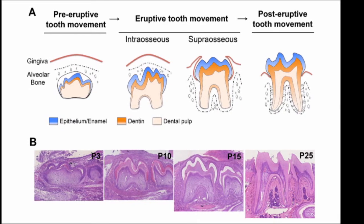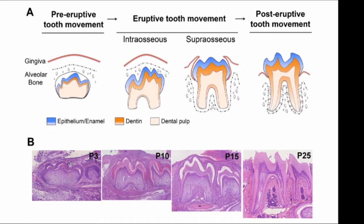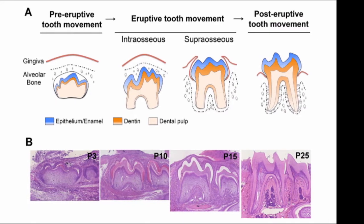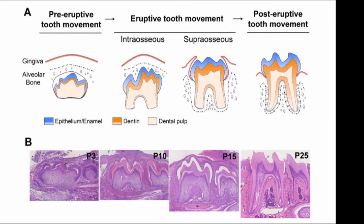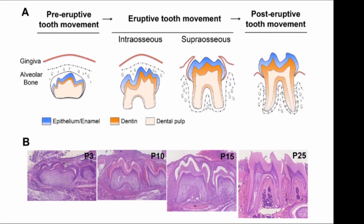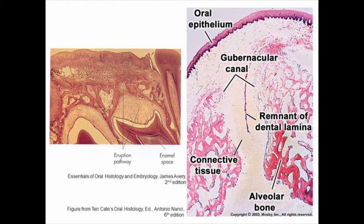The periodontal ligament is composed of many fiber bundles which are synthesized and destroyed by fibroblasts. The fibroblasts in the periodontal ligament are very unique — they are linked to adjacent fibroblasts with cellular junctions and have a unique contractile property. When many fibroblasts simultaneously contract, they exert a contractile push to the erupting tooth, moving it toward the oral cavity in an axial direction.